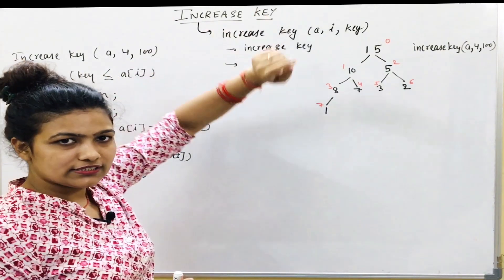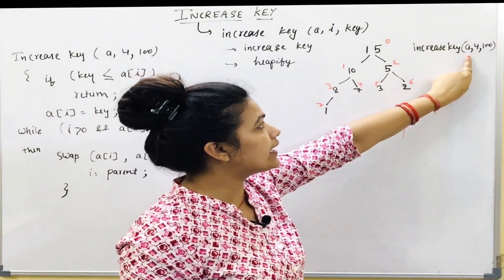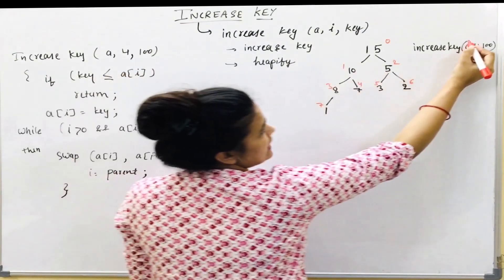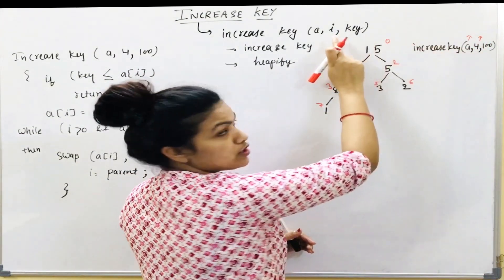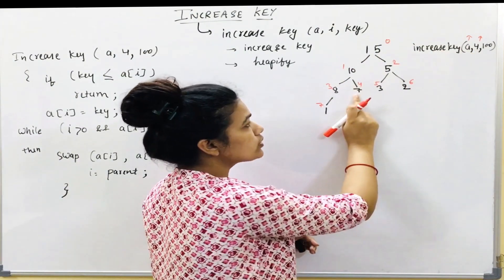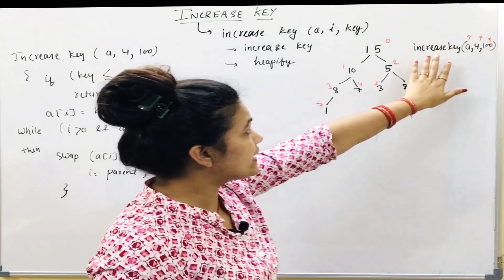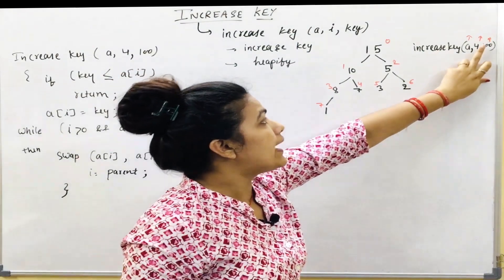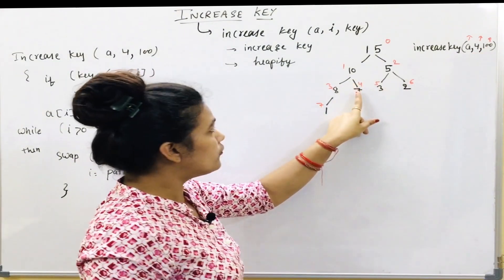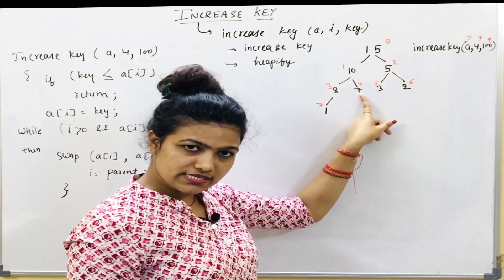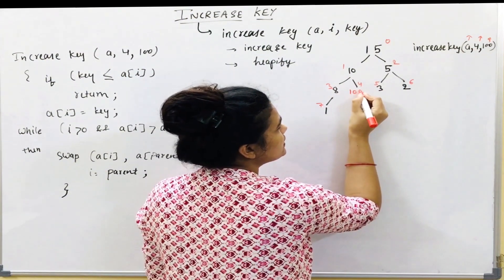So how does increase key work? Suppose we are given: increase key A, 4, 100 — meaning array A, at index location 4, and the new key value is 100. At 4th position the current value is 7. We simply delete 7 and replace it with 100 at that location.